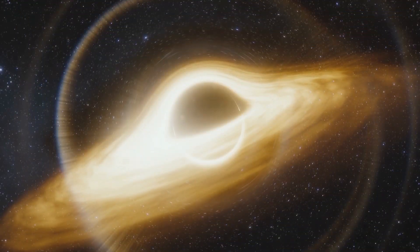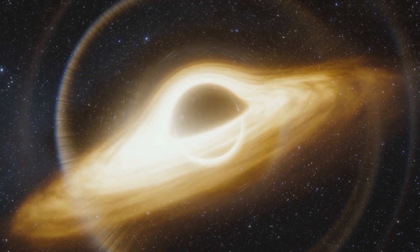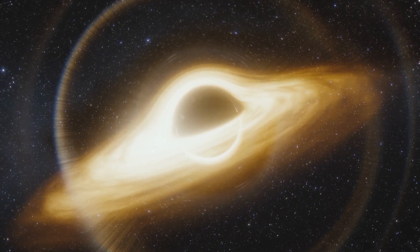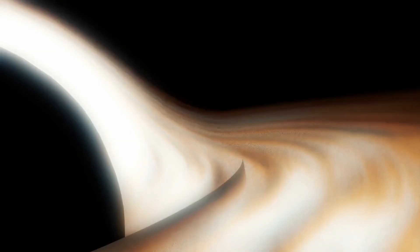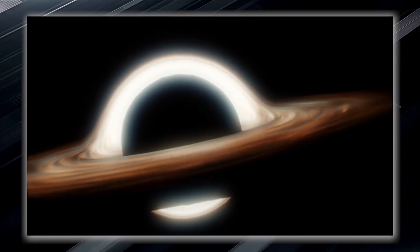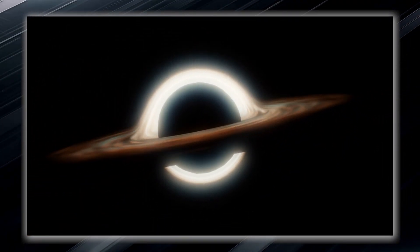This is where things become truly extraordinary. The gravitational pull near a black hole is so incredibly strong that it creates what is known as an event horizon. The event horizon is not a physical barrier, but rather a region where space gradually bends. It is an invisible boundary or point of no return.